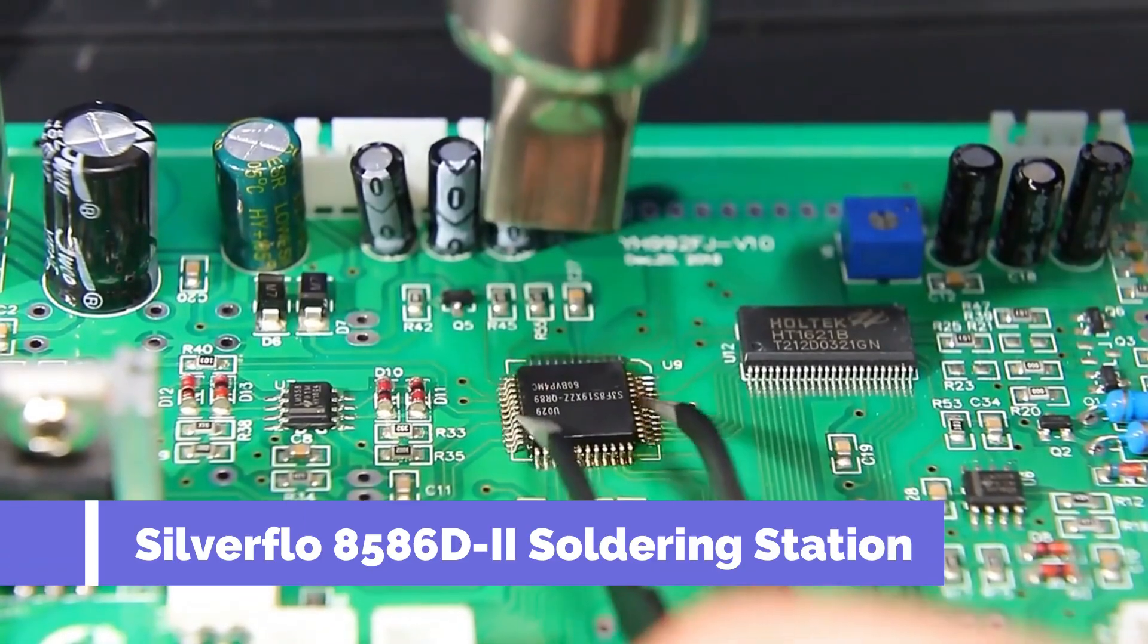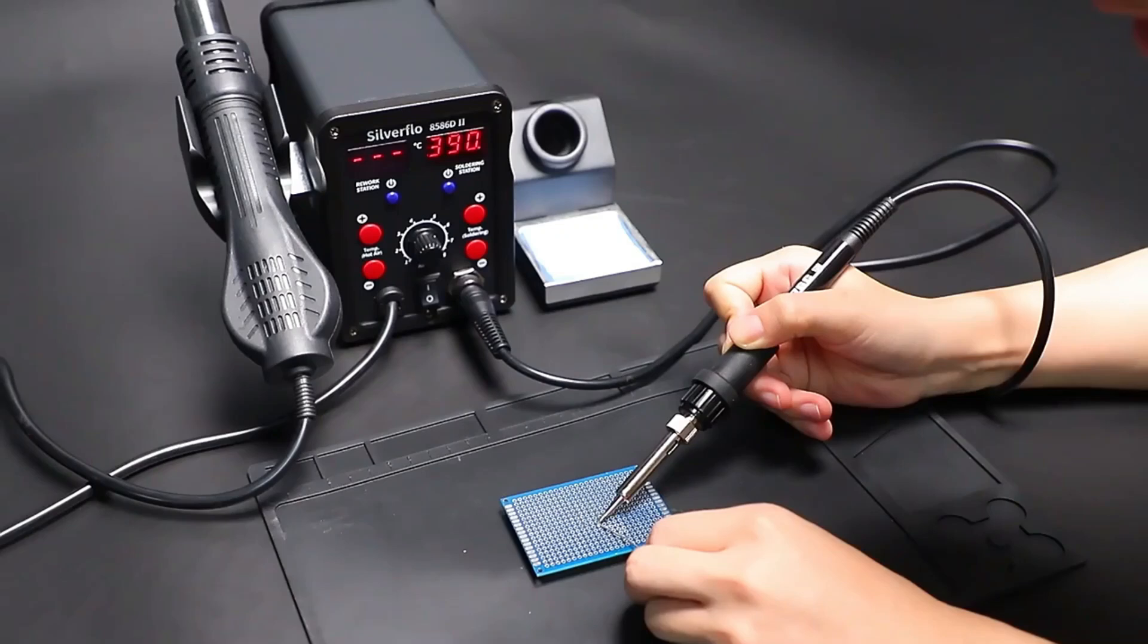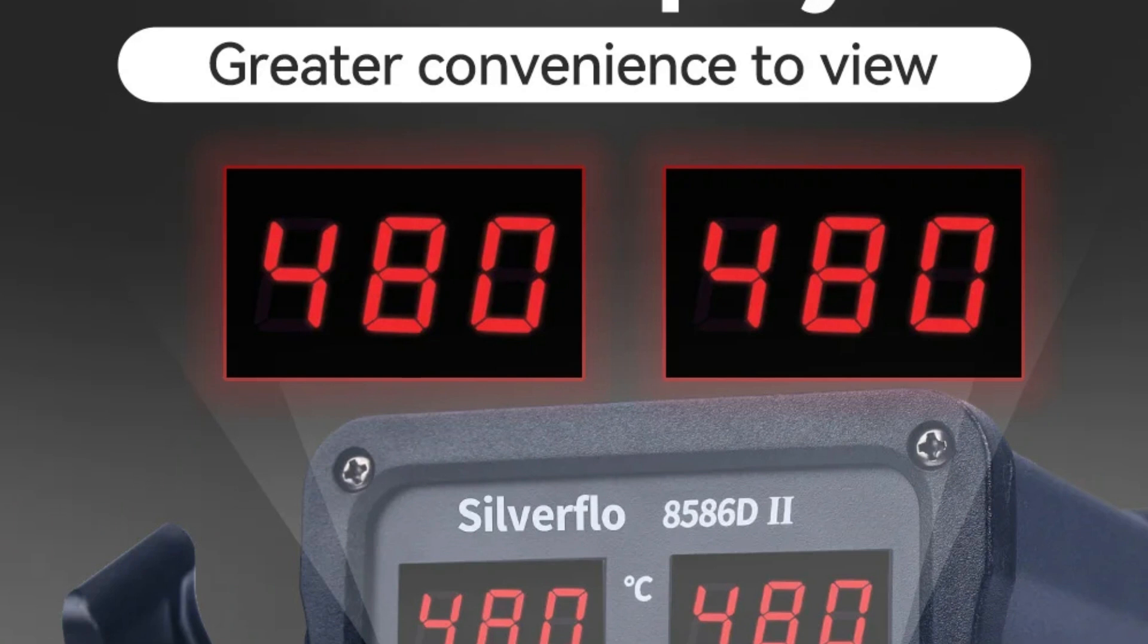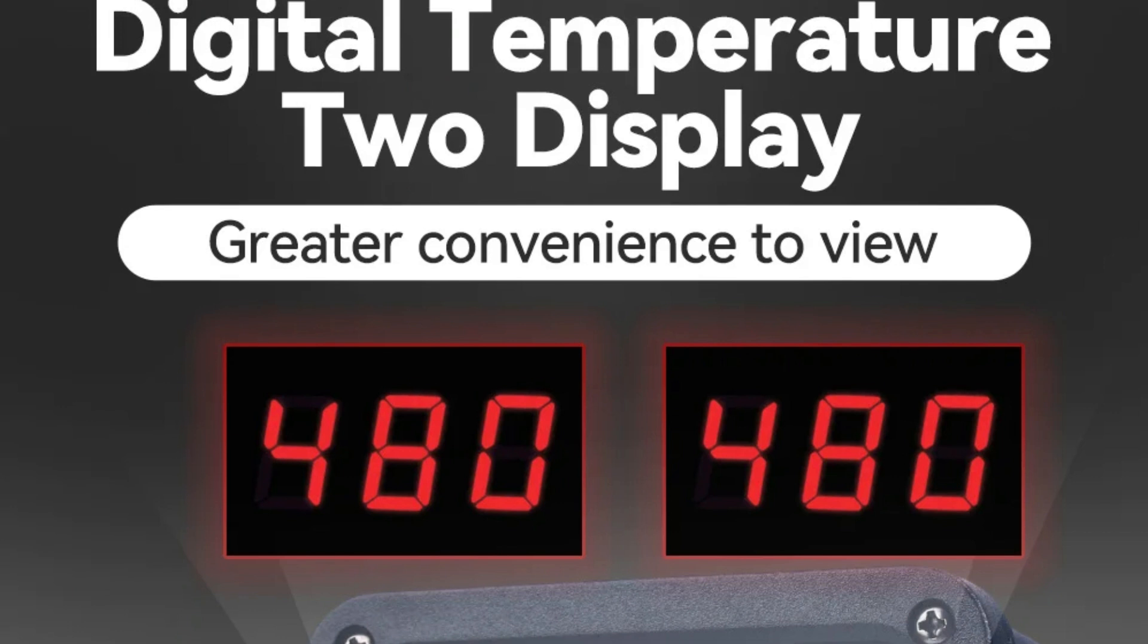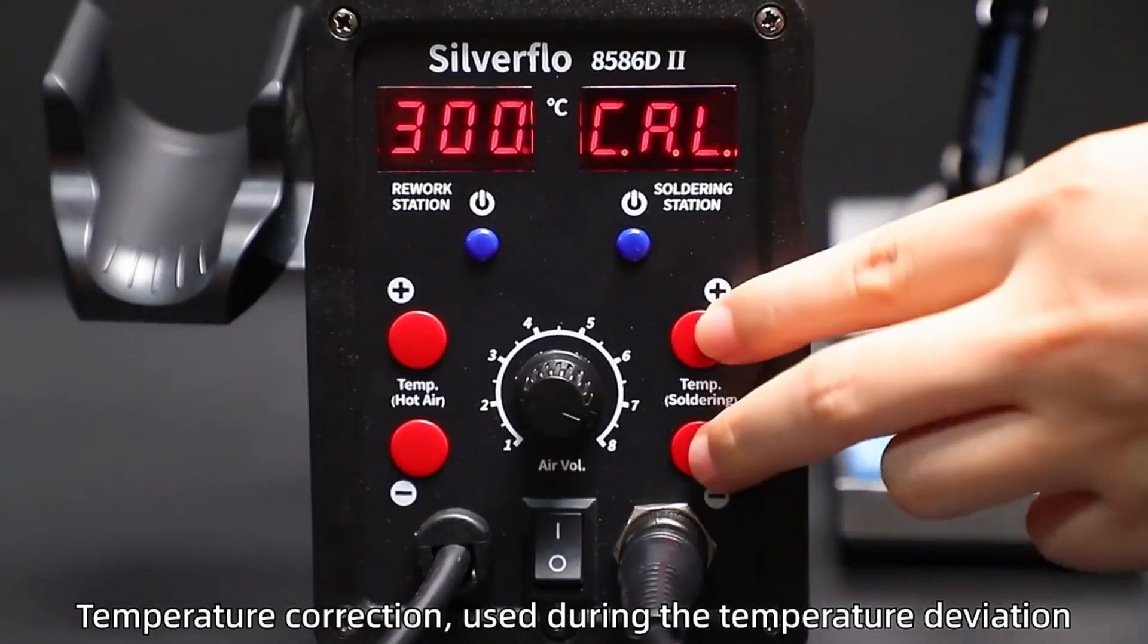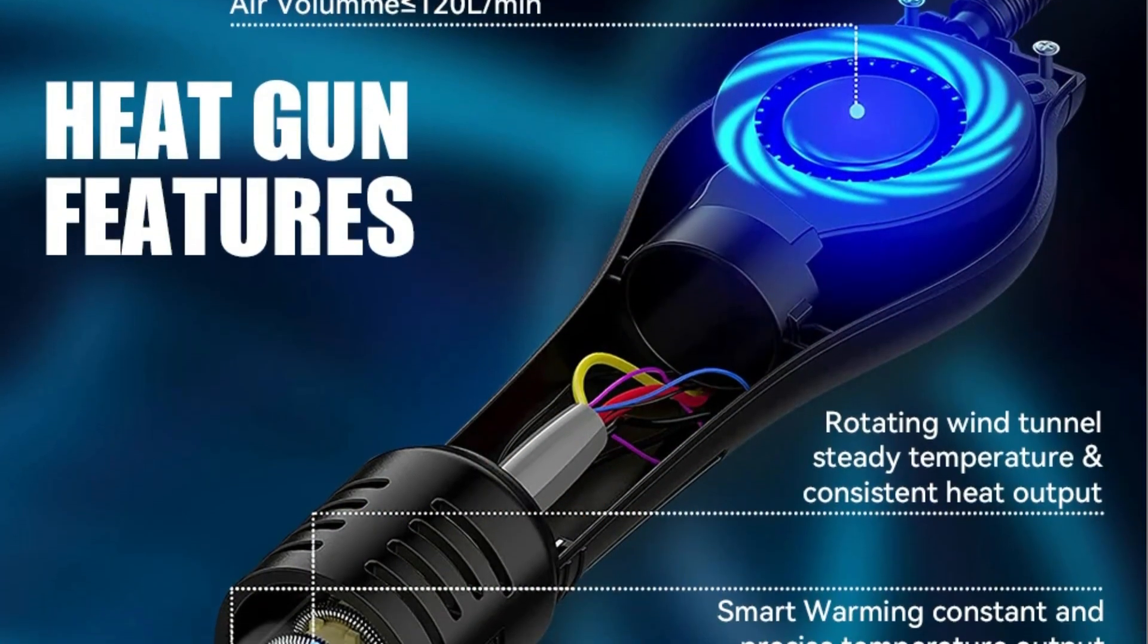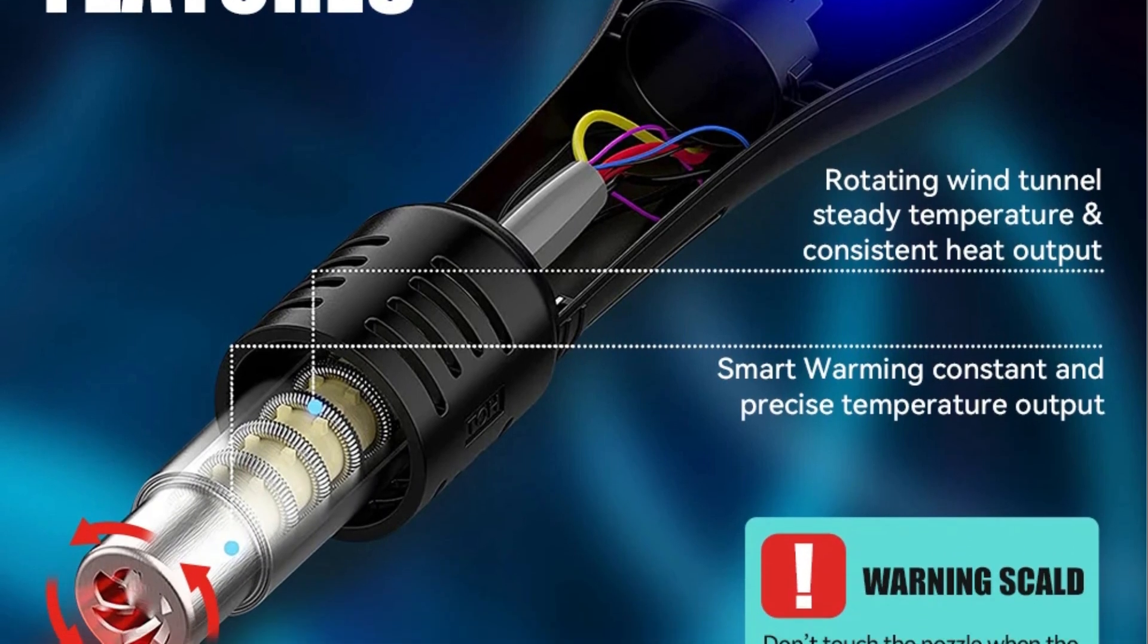Number 4: Silverflow 8586D-2 Soldering Station. The Silverflow 8586D-2 is a 2-in-1 soldering station combining a hot-air gun and soldering iron with dual-digital displays for precise temperature control. It features a 10-minute sleep mode that enhances safety and extends tip lifespan. CE and FCC certified, it's built for reliability and professional use. Designed for SMD rework, circuit board repairs, and general soldering tasks, this unit offers stable performance and adjustable airflow, making it an excellent choice for technicians and repair shops.